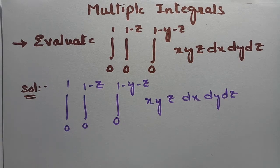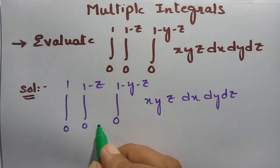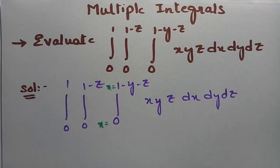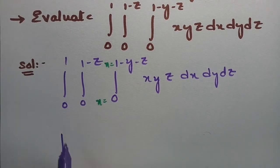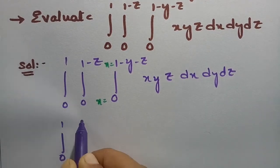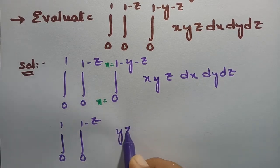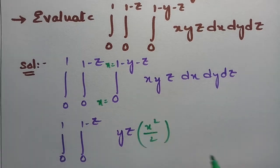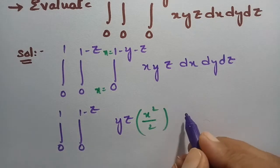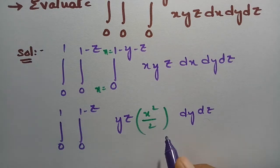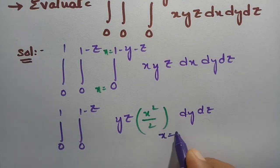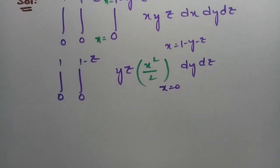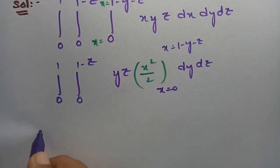First of all, we have to integrate with respect to x, so these are the x limits. I am going to integrate with respect to x first: integral 0 to 1, integral 0 to 1 minus z, this is yz and for x the integration will be x squared by 2, with dy dz remaining and the x limits from 0 to 1 minus y minus z.